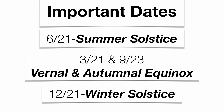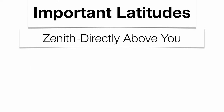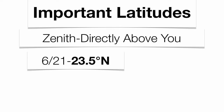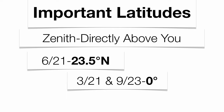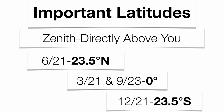You have a couple of important dates: the first day of summer, the first day of spring, the first day of fall, and the first day of winter. Make sure you know the names of those important dates. Those dates have certain latitudes you need to associate with them — you need to know where the sun is going to be at the zenith. The zenith is the point directly above you, giving you the sun's energy at about a 90-degree angle. On June 21st, the Tropic of Cancer will have the sun at the zenith. On March 21st and September 23rd, the equator will have the sun at the zenith. And on December 21st, the Tropic of Capricorn will have the sun at the zenith. So you have four dates and three latitudes, because your two equinoxes double up with the equator.